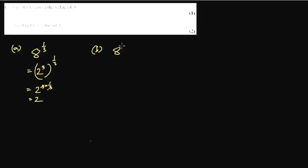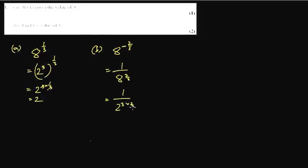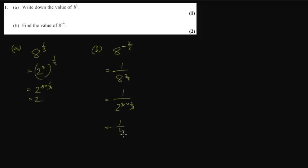Now 8 to the power minus 2/3. First, let's make it positive. If you have a negative power, taking it downstairs makes it positive, so this becomes 1 over 8 to the power 2/3. That is 2 cubed to the power 2/3, so 3 times 2/3 cancels. 2 squared is 4, so the answer is 1/4.